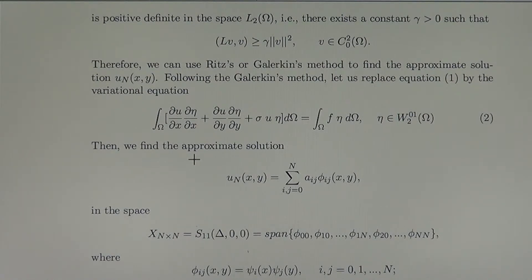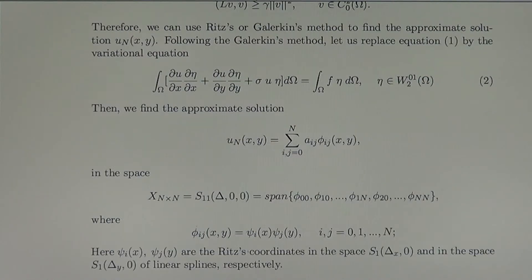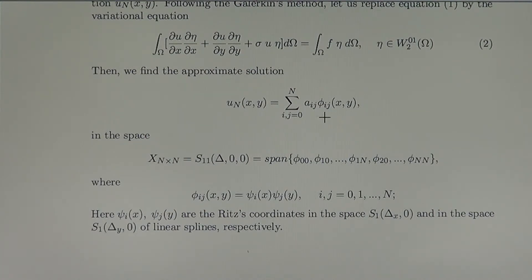Then we find the approximate solution in the form of linear combination of the coordinates phi i j, where these coordinates are given here. It is a product of psi i of x times psi j of y, where psi i, psi j are Ritz coordinates in the space S1 delta x 0 and S1 delta y 0 of linear splines respectively.